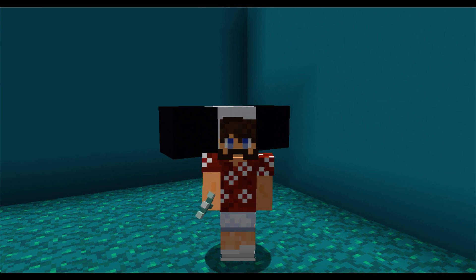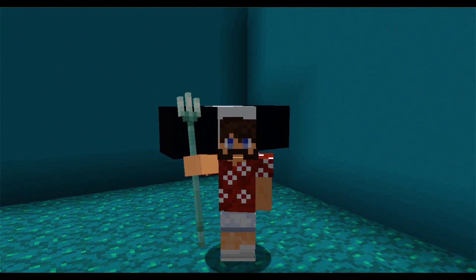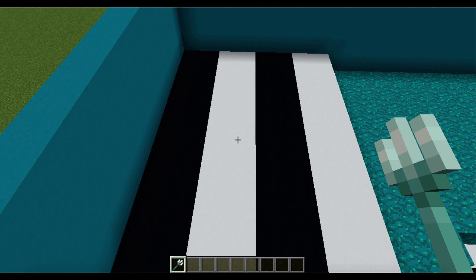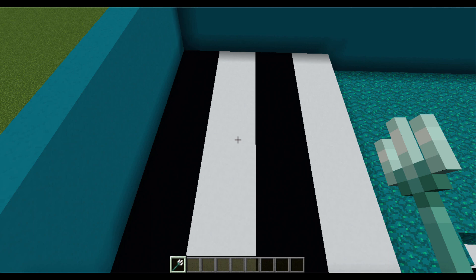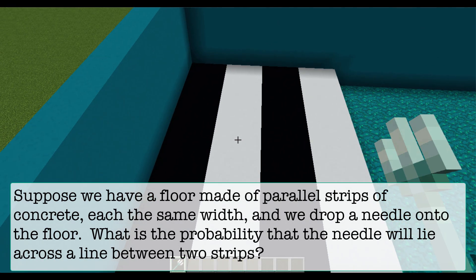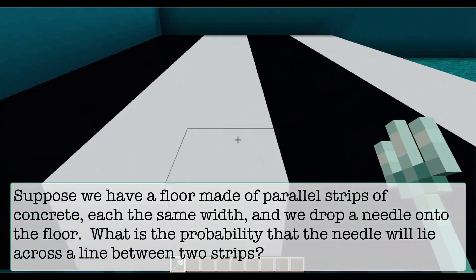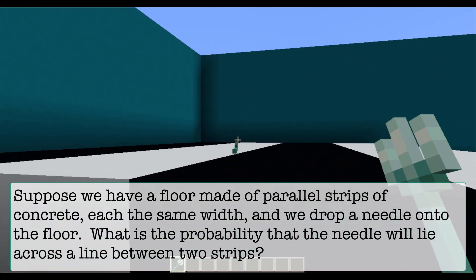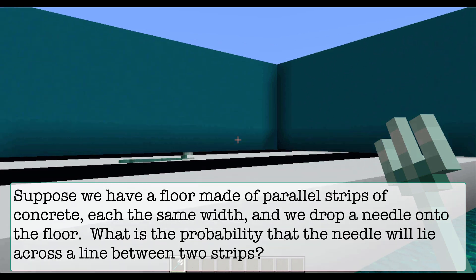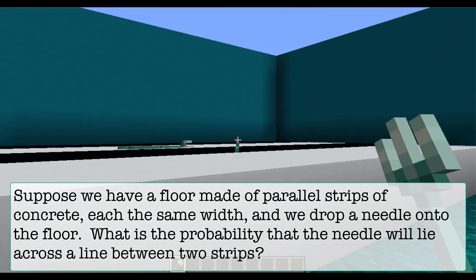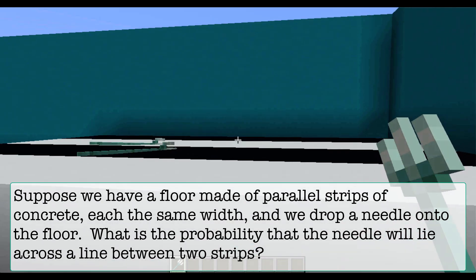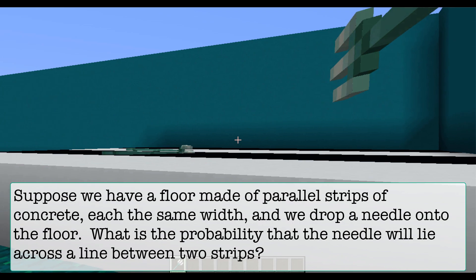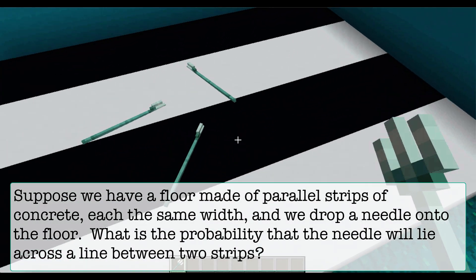So what exactly is Buffon's Needle Problem? In the 18th century, Buffon posed this question: suppose we have a floor made of parallel strips of concrete, each the same width, and we drop a needle onto the floor. What is the probability that the needle will lie across a line between two strips?